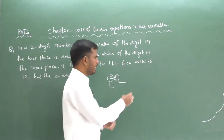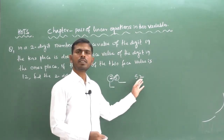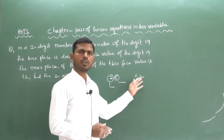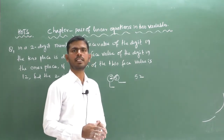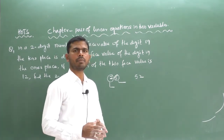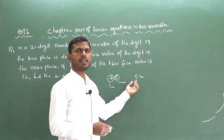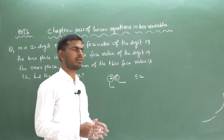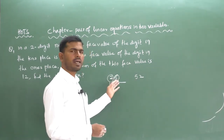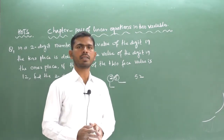For the interchanged number — swapping 5 and 2 — the digits become 52. Now 2 is in the units place, so its face value is 2. And 5 is in the tens place, with face value 5. So in 25 and 52, only the place value changes while the face value remains constant.